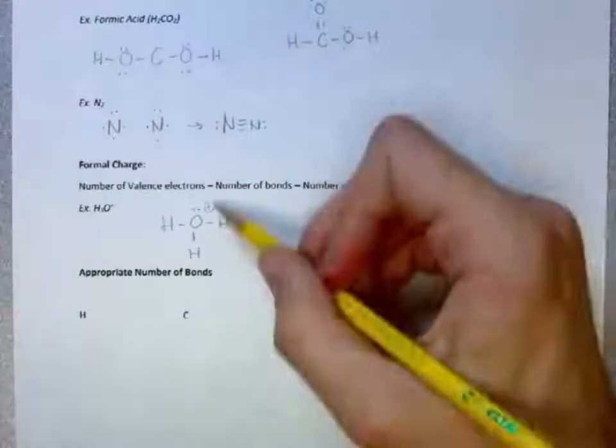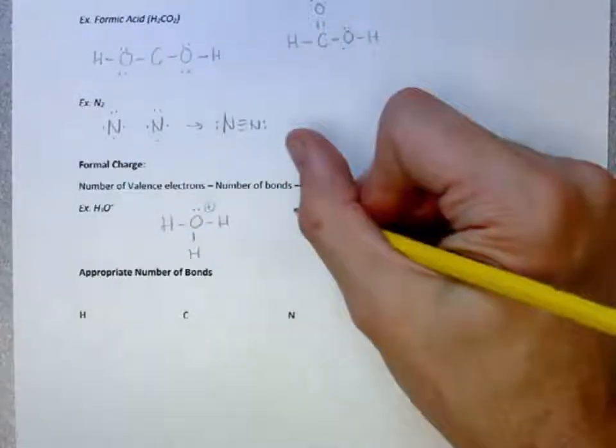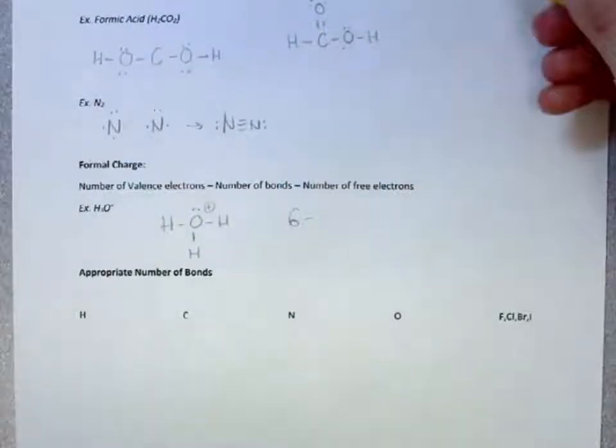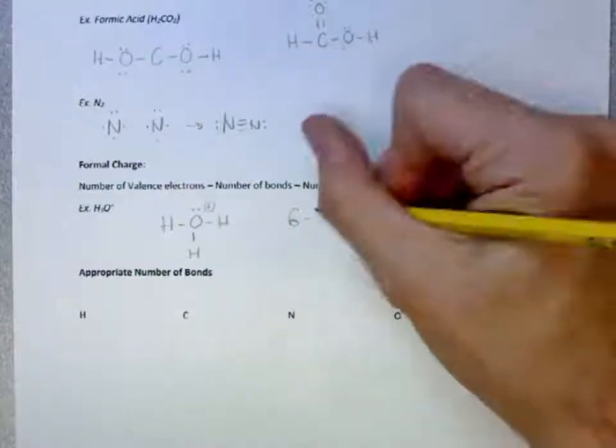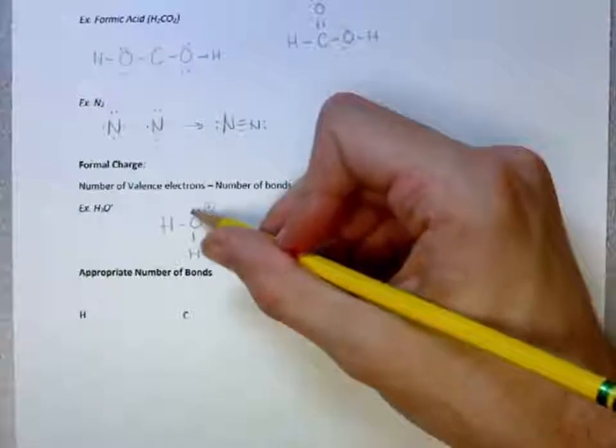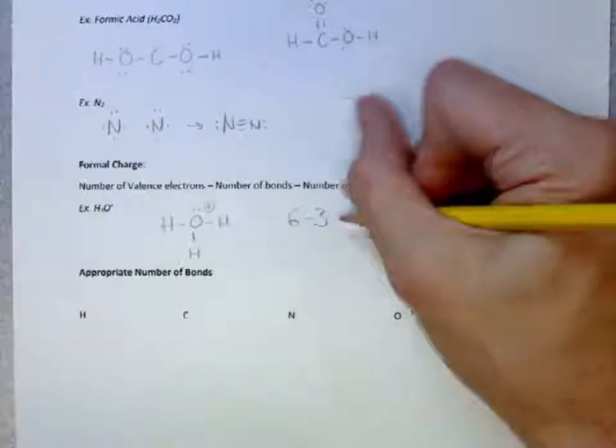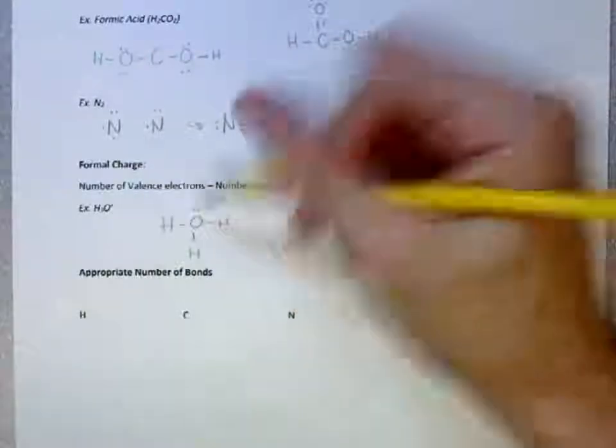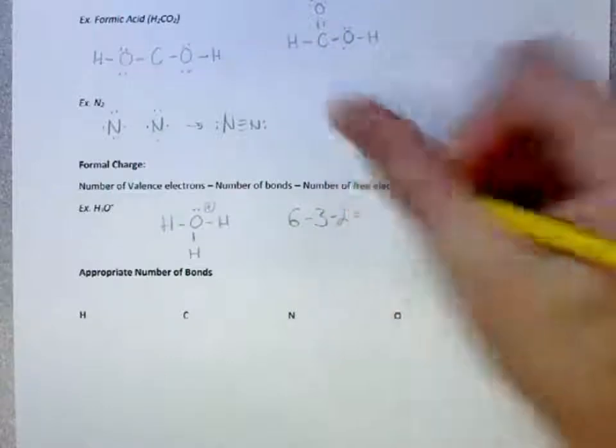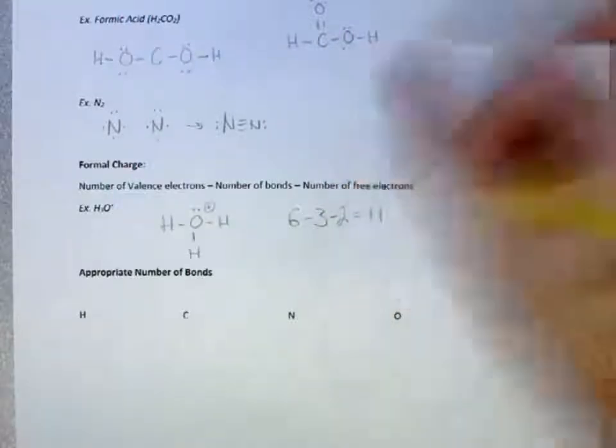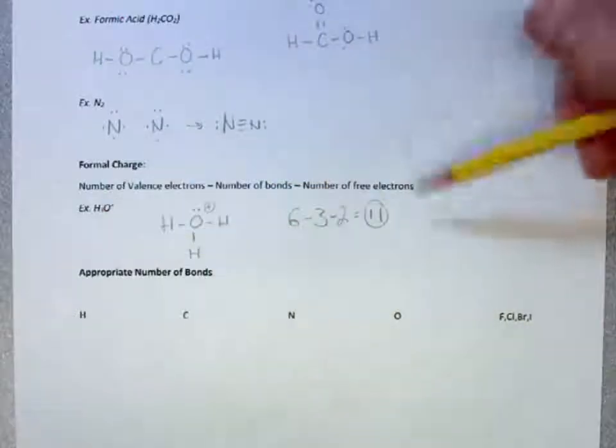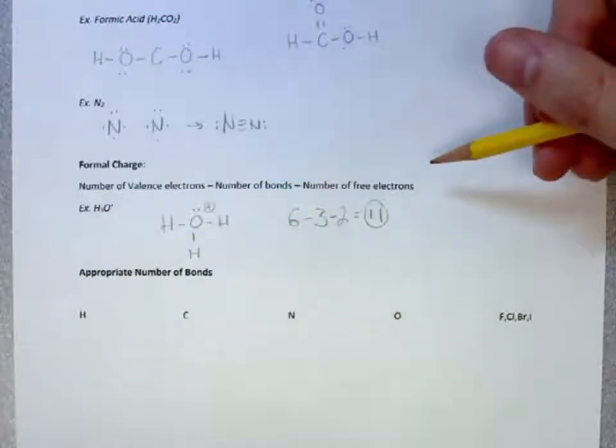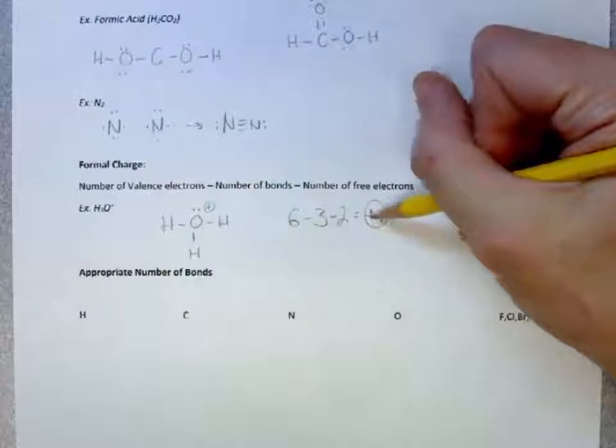And if we look at this oxygen here, we know that oxygen is supposed to have 6 valence electrons. And we minus the number of bonds to it. So, it's going to be minus 3 bonds. And we minus 2 electrons because they are existing as lone pairs. And so, that comes out of plus 1. Oxygen in a hydronium ion is a formal charge of plus 1.